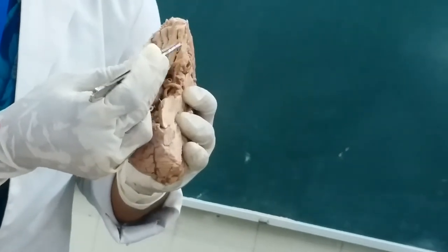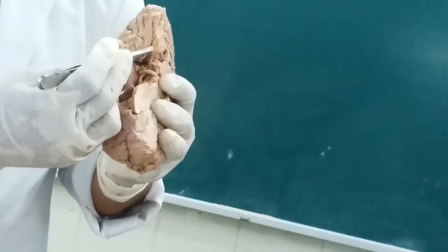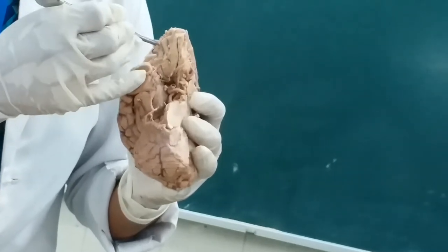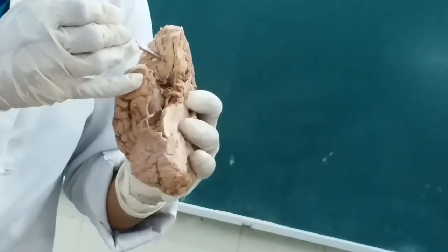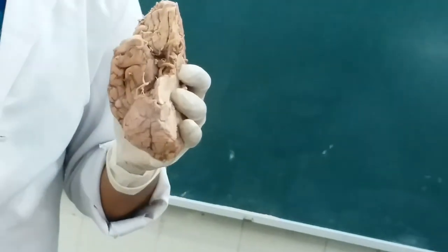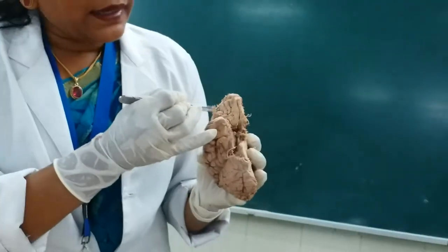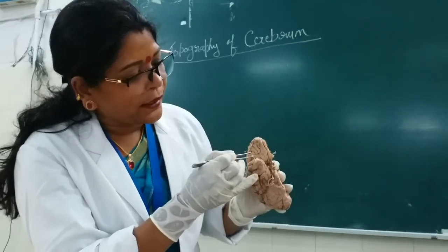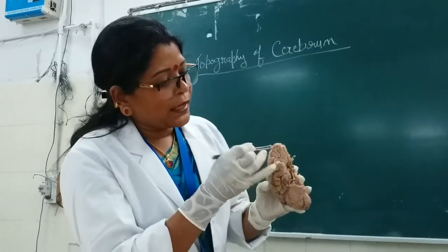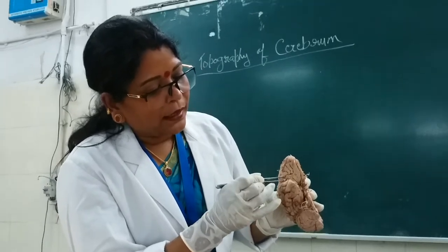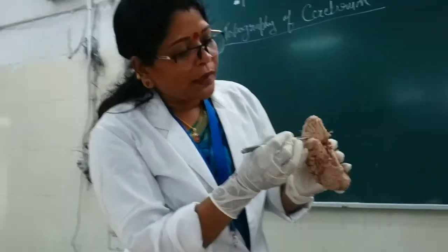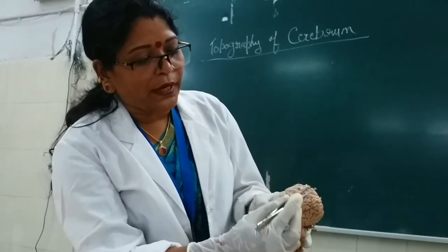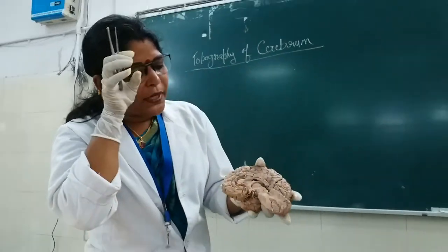Lateral to the olfactory sulcus, the gyrus you can see here is the gyrus rectus. Lateral to that, there is an H-shaped sulcus on the orbital surface, which divides the gyrus into the anterior, posterior, medial, and lateral orbital gyri. So this was the orbital surface with all these orbital gyri, as well as the rest of the frontal gyri on the superolateral surface and on the medial surface.